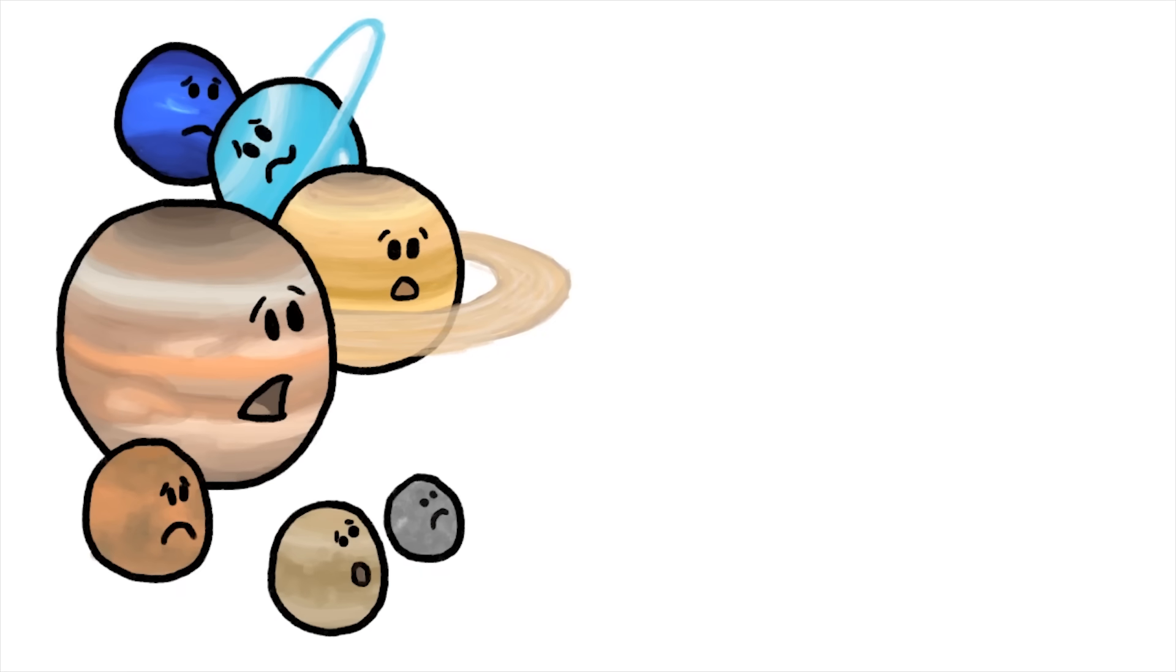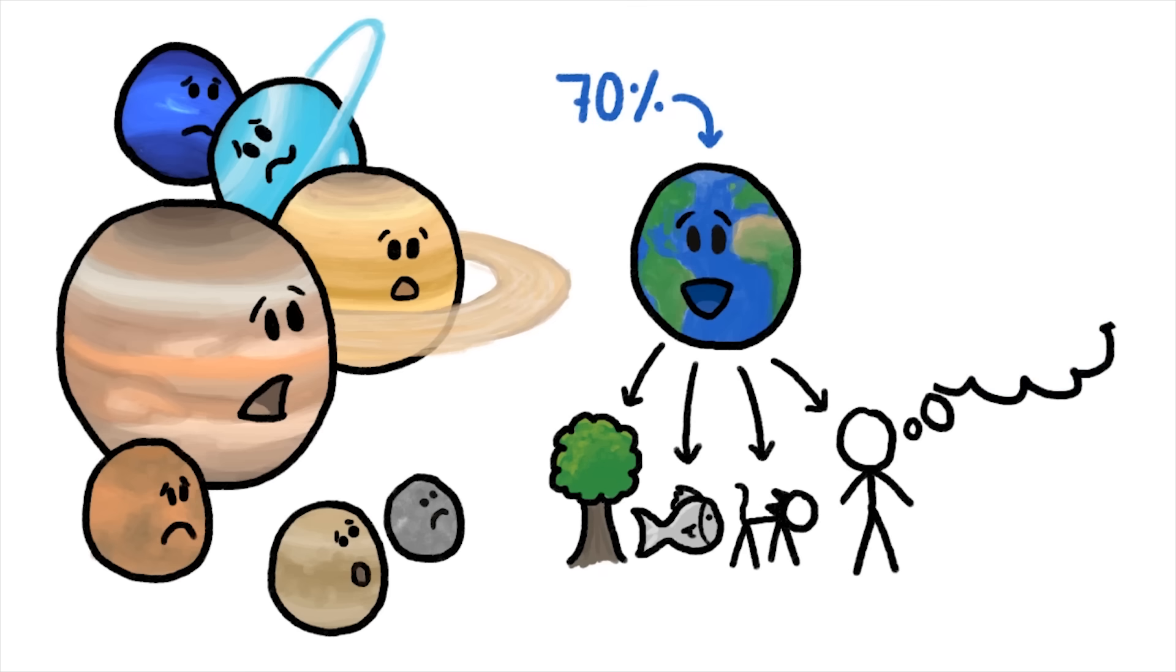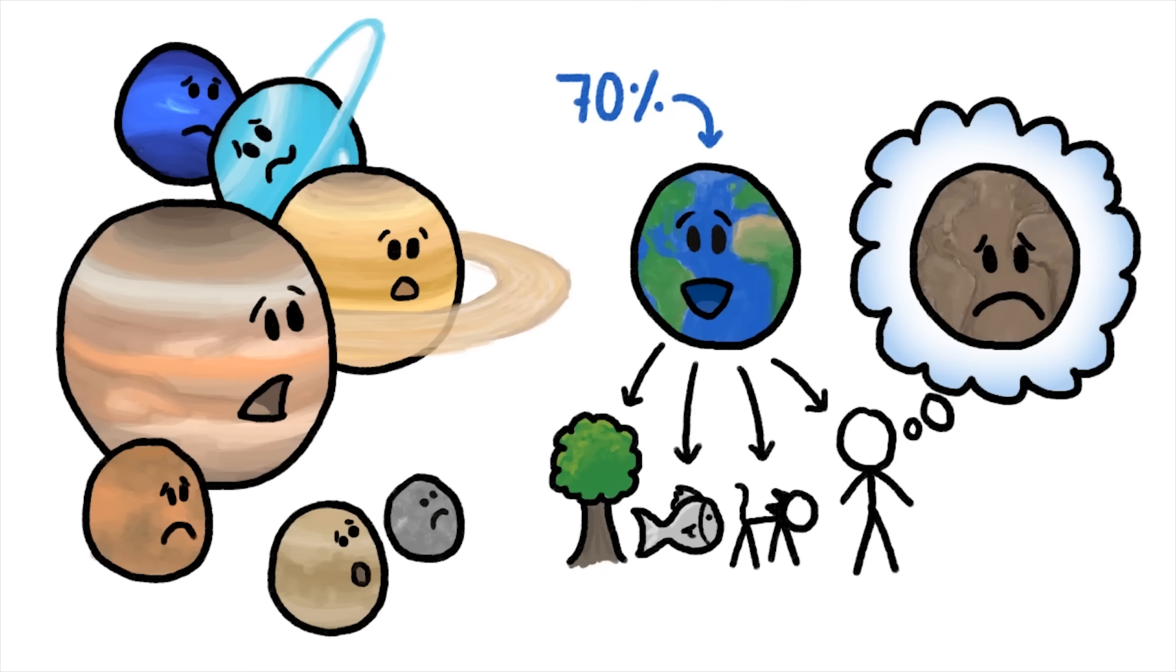Unlike every other planet in our solar system, Earth's surface is 70% liquid water, which while useful for life, is also kind of weird, because everything we know about how and when our planet formed says Earth's surface should be bone dry.